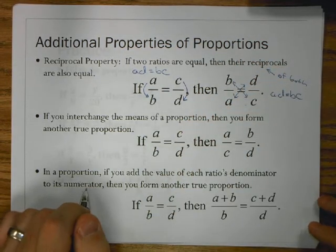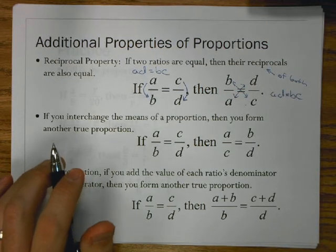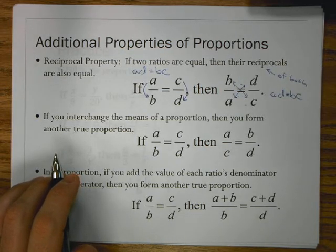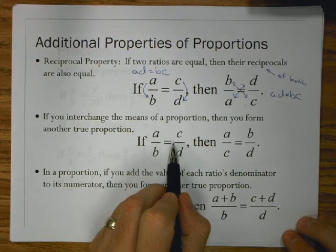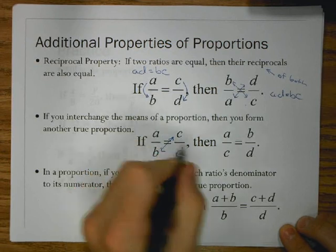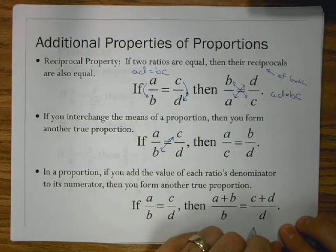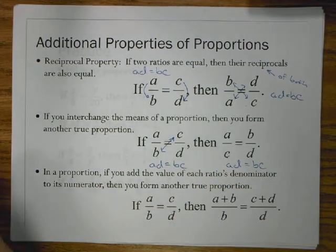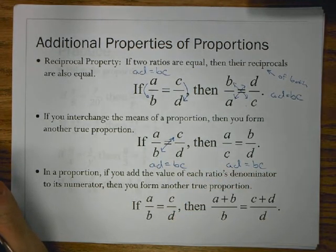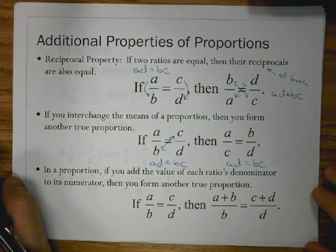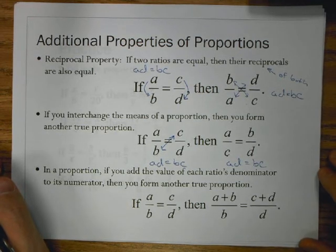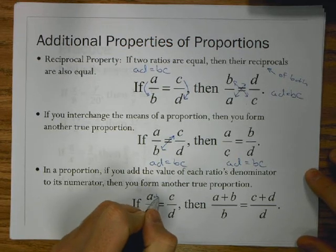Even though I flipped them and took reciprocals of both, it still turns out to be the same proportion. If I was solving for a value, I could still find the same value. Our second property says: if you interchange the means of a proportion, you form another true proportion. The means are b and c, so if I switch those two, the cross products a×d = b×c remain the same — it doesn't change the solution.